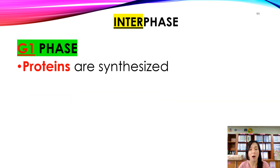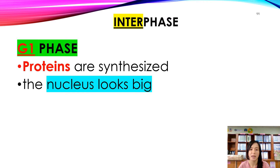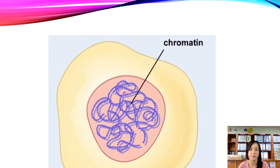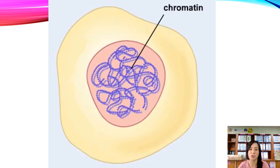Proteins are also synthesized during G1 phase, and the nucleus looks large. The chromosomes are in the form of chromatin — chromatin means the chromosome is in a thread-like form, very fine. This diagram shows the chromosome in its thread-like condition, which we call chromatin.